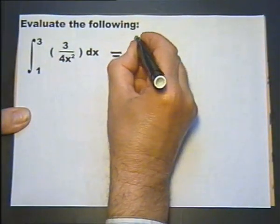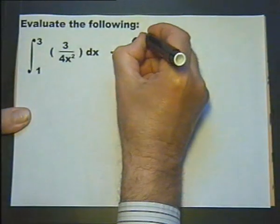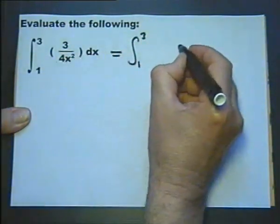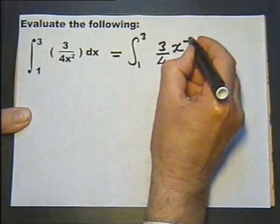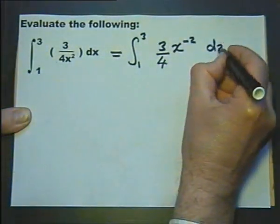Evaluate this definite integral. But before we can do that, let's remember sometimes we have to rewrite the question. So this needs to be rewritten as 3 over 4, 3 quarters of x to the power of minus 2, with respect to x. Now we can integrate it.